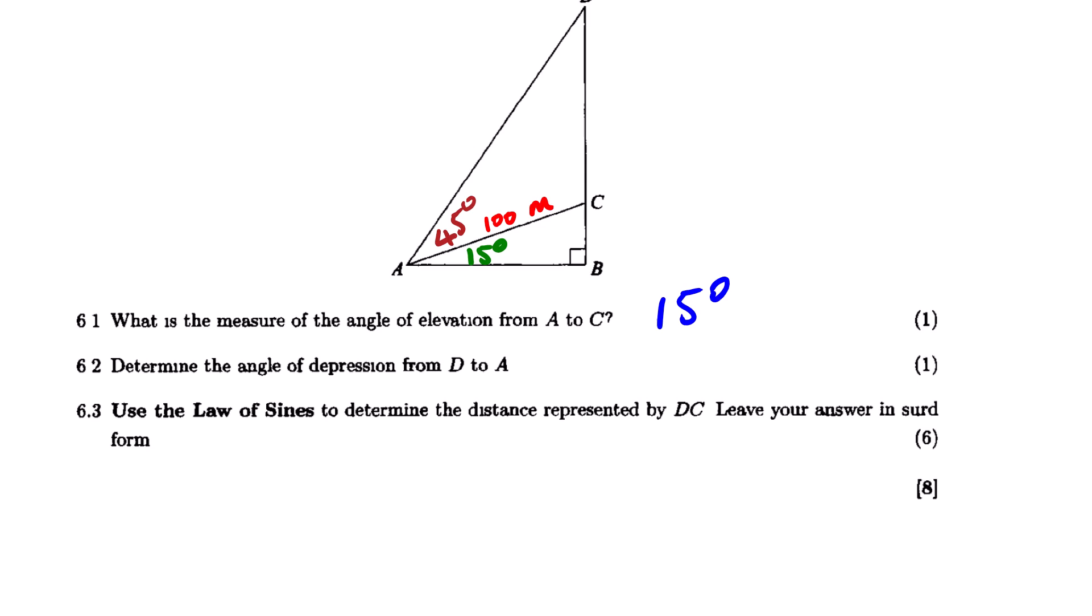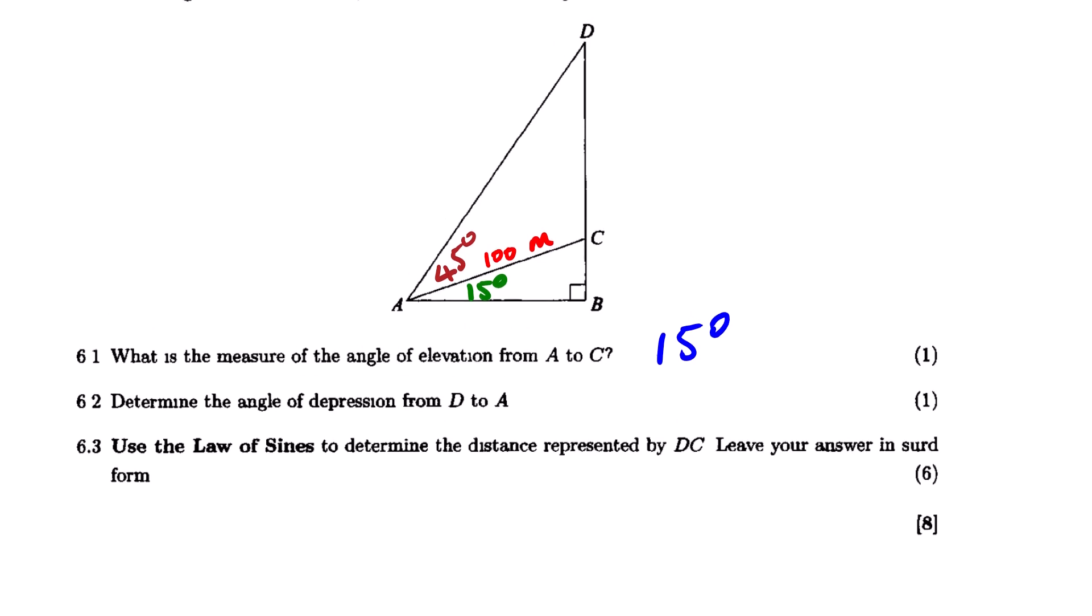And then determine the angle of depression from D to A. So this is the actual angle, D to A. This is our A. So the angle of depression, it's this angle plus this one. So it's actually 45 plus 15, that will be 60 degrees.